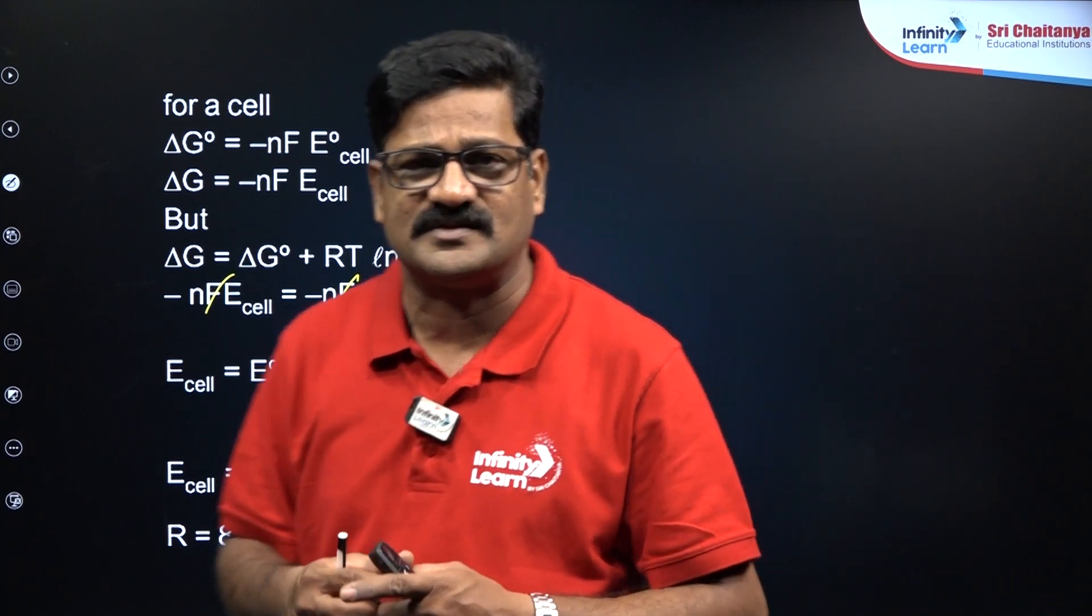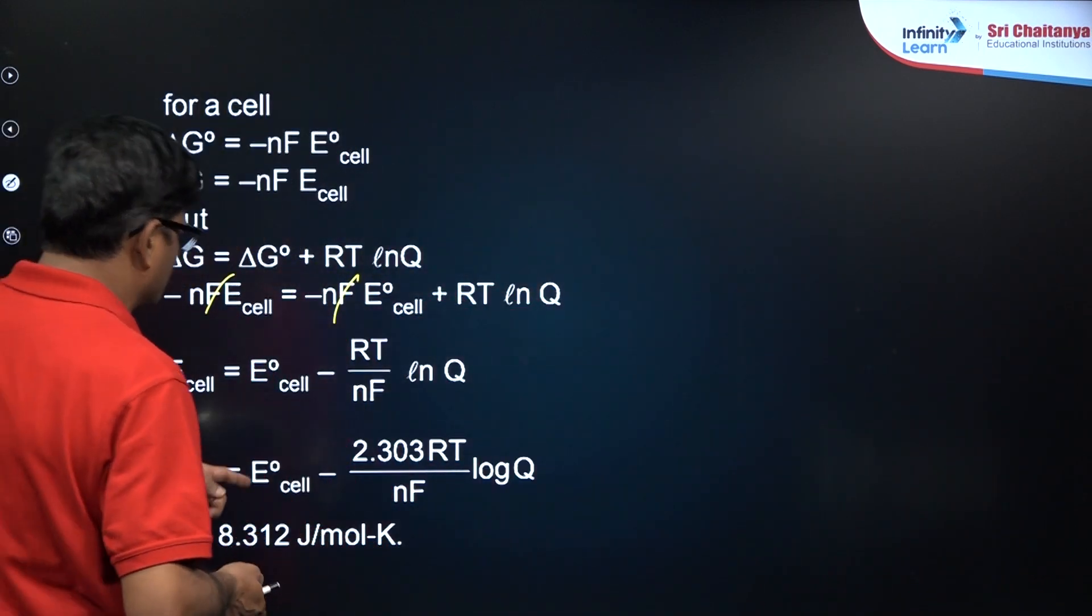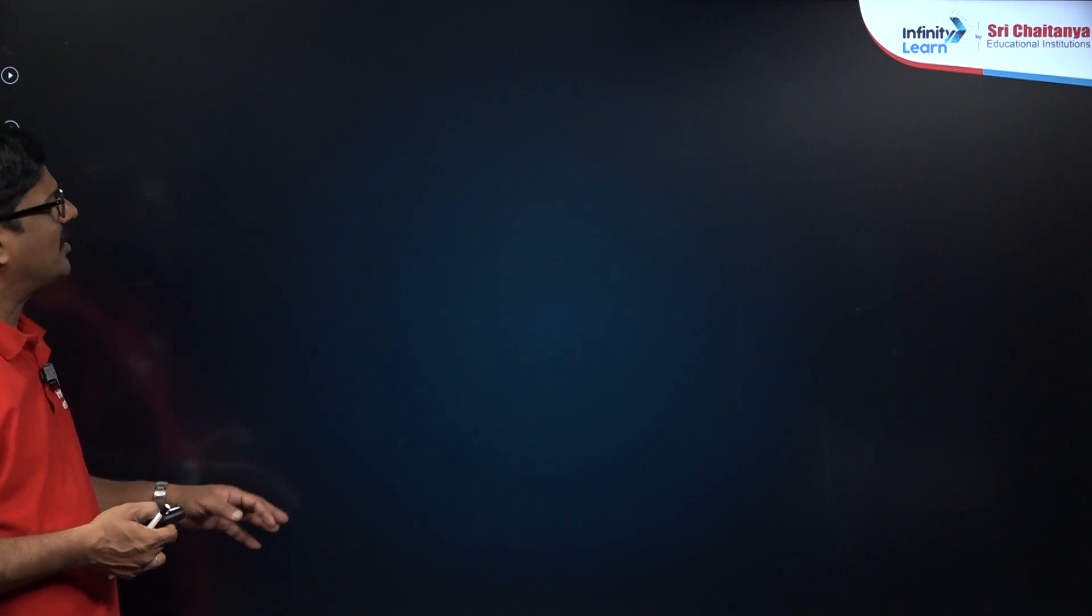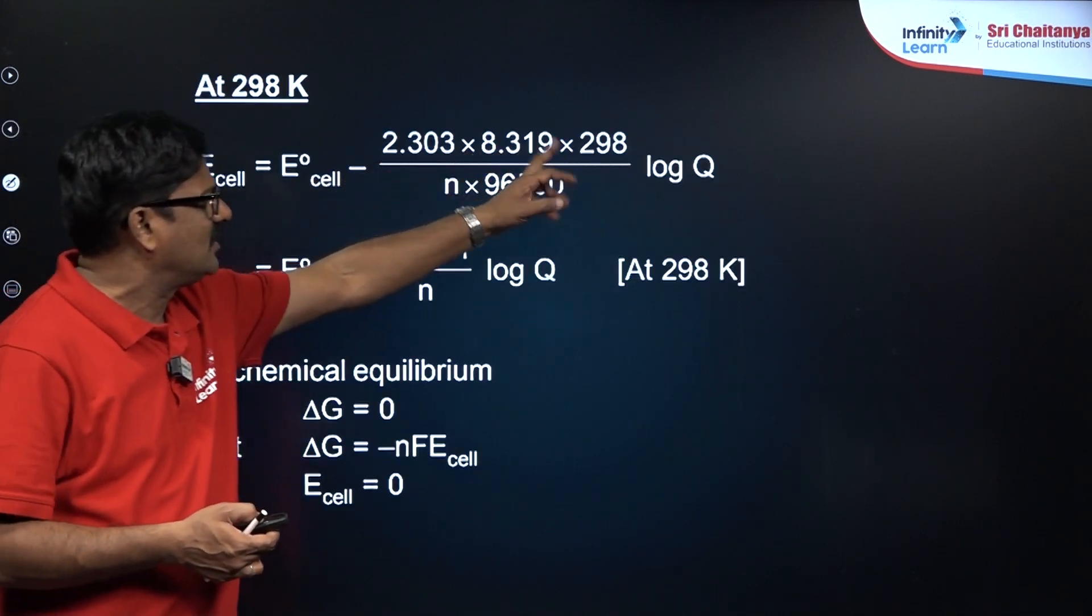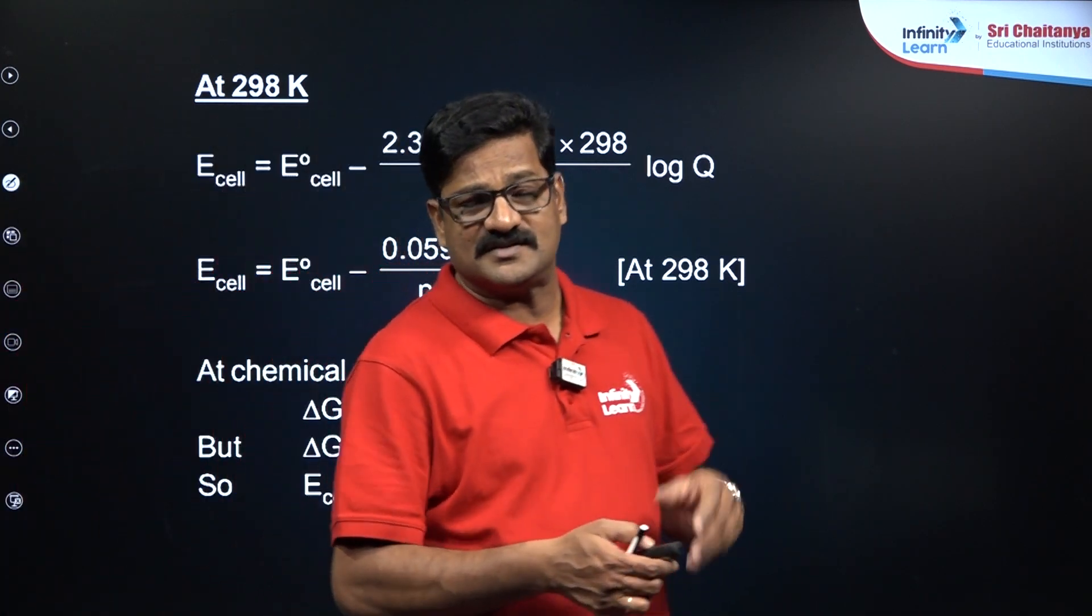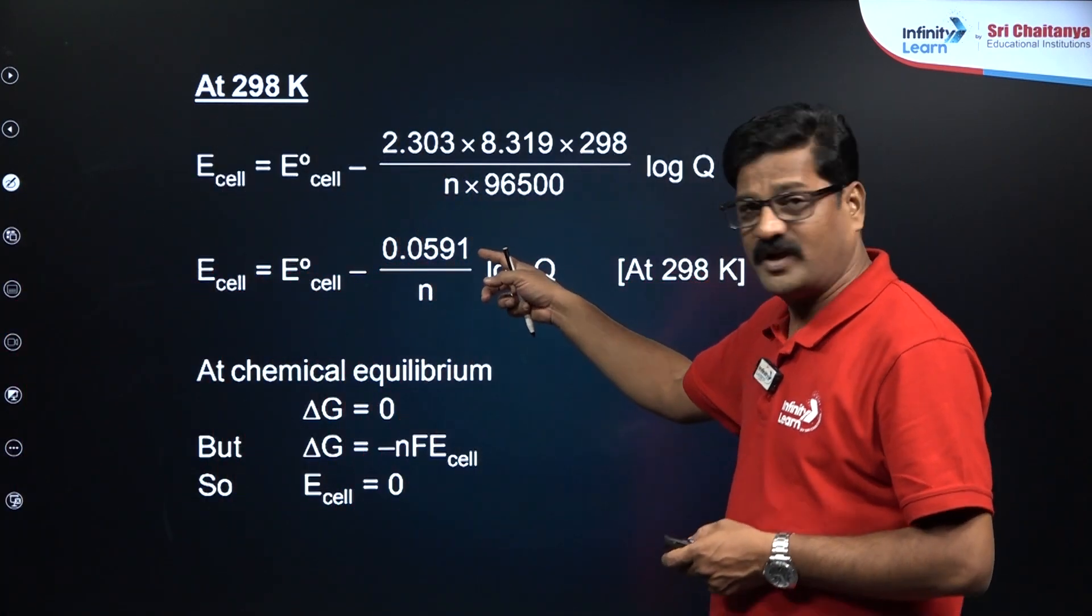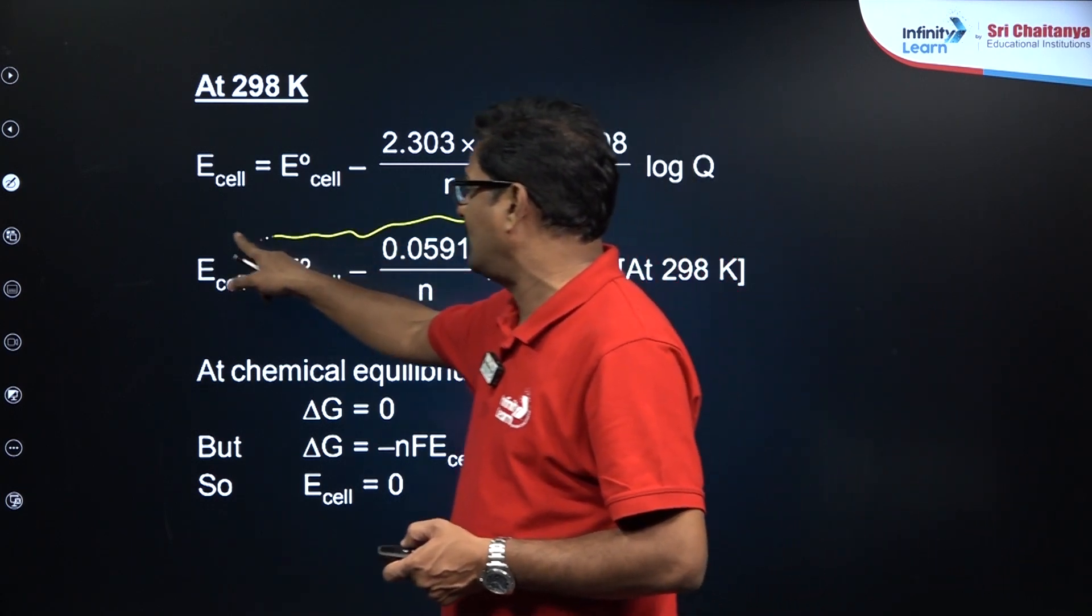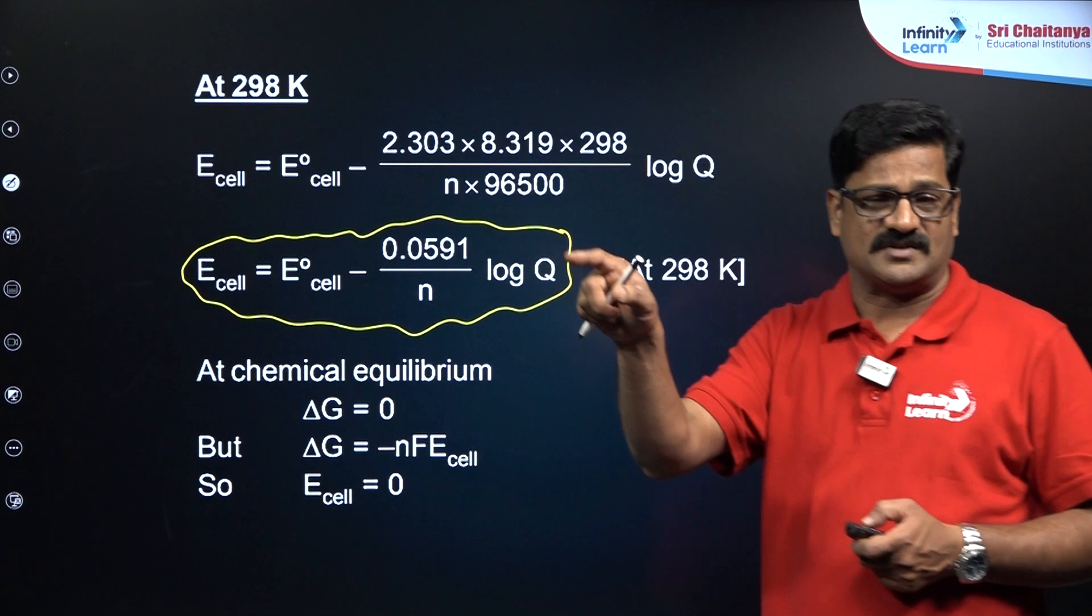R value is the gas constant, T is the temperature, n is the number of electrons, F is the Faraday constant. You apply all these constants here. E cell equals E naught cell minus 0.0591 by n ln Q. This is actually what you say the Nernst equation.